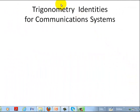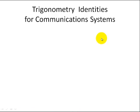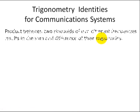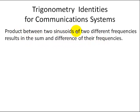Hello, Dr. J here. We're going to do more trigonometric identities, but this time I'm going to add some applications to communication systems, just in a very light way. I'll talk about it more rigorously in later videos. The bottom line I want you to get from this video is that the product between two sinusoids of two different frequencies results in the sum and difference of their frequencies.